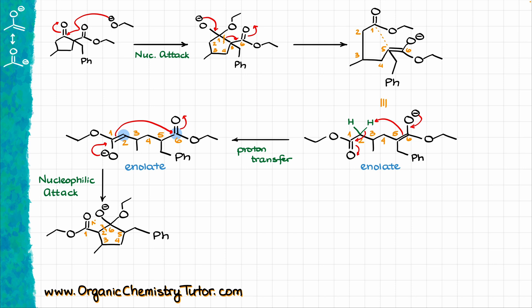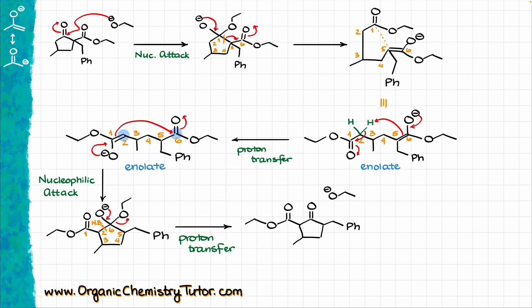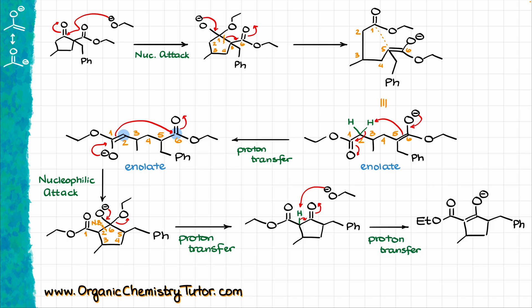The new bond between carbons two and six is now in place. The next part of the mechanism is leaving group dissociation from our tetrahedral intermediate — oxygen kicks the ethoxy group out, giving us the dicarbonyl and the expelled ethoxide. At this point, we immediately deprotonate the position between our two carbonyls, which serves as a driving force for the reaction, giving us the enolate intermediate.